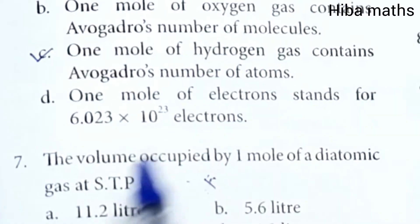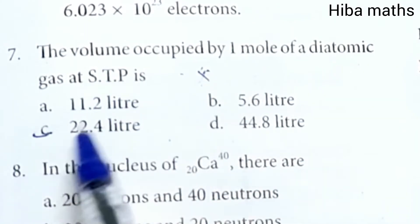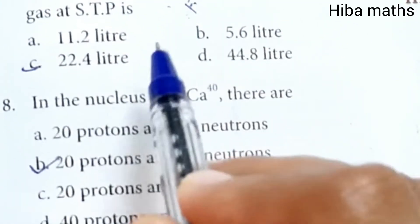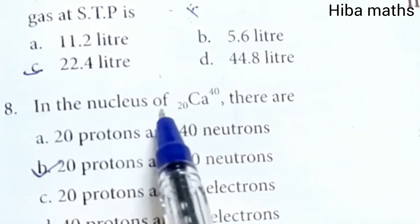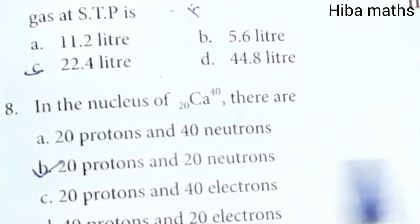Volume occupied by one mole of a diatomic gas at STP is 22.4 liters. In the nucleus of 20Ca40, there are 20 protons and 20 neutrons.